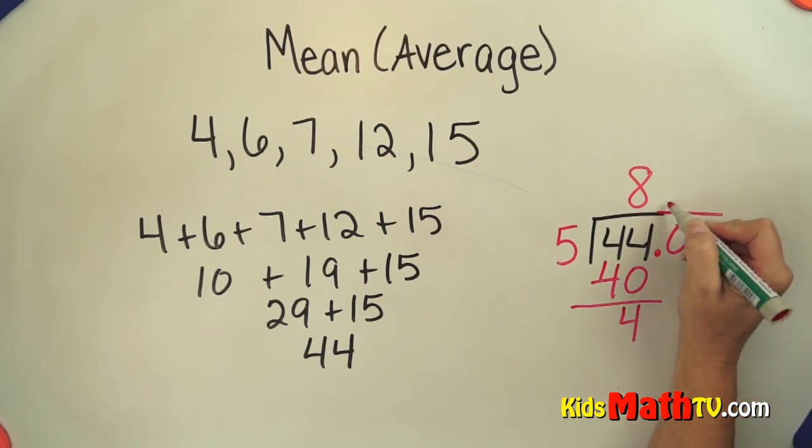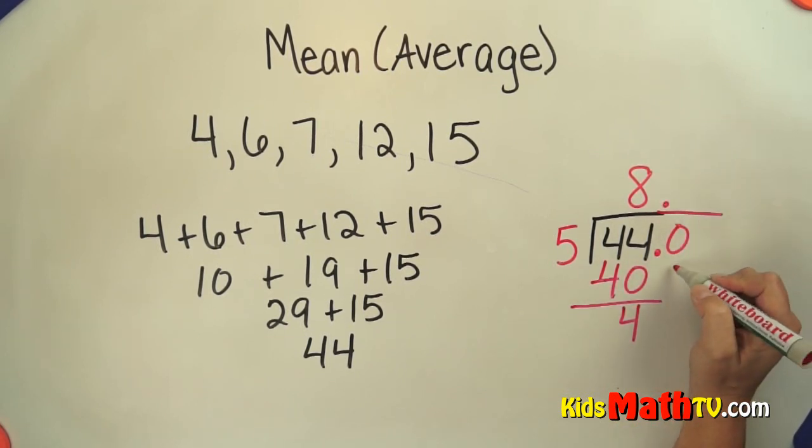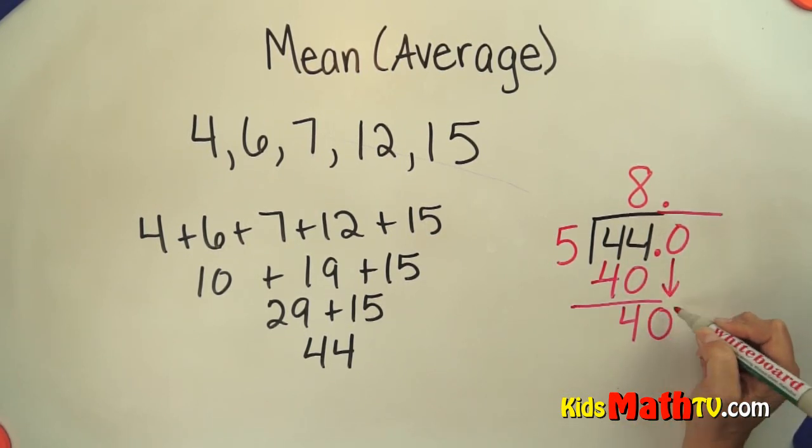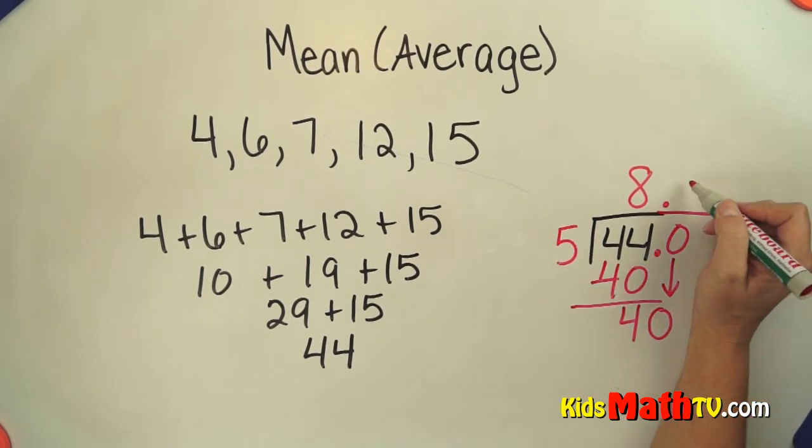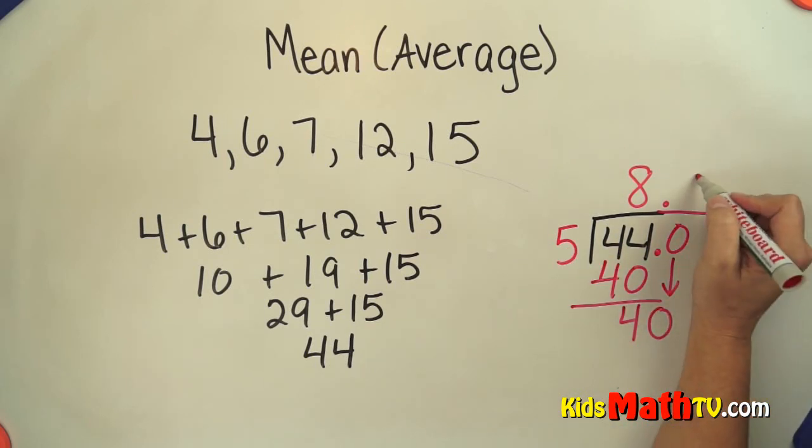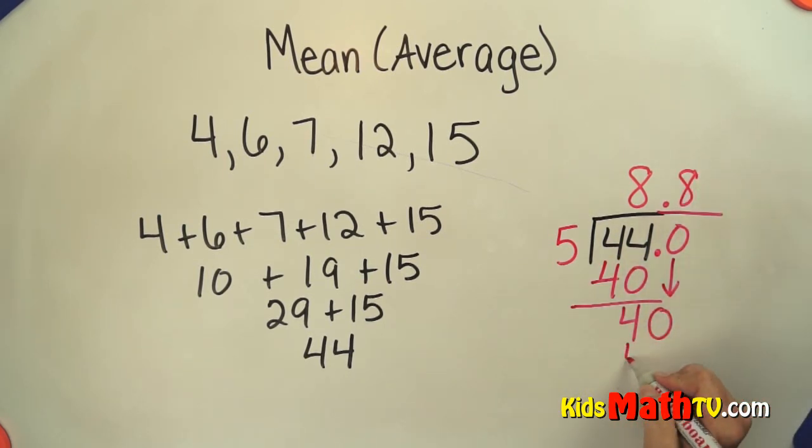I'm going to make this into a decimal number, so I'm going to put a 0 at the end there, bring it down, we have 40. How many 5's in 40? It's 8, 8 times 5 is 40, subtract and we get 0.